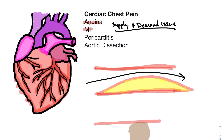Classic angina chest pain: somebody comes in and says, 'Hey doc, I walk three blocks and now my chest starts to hurt. It hurts when I walk faster or do a light jog, but as soon as I rest for 10 or 15 minutes, it gets better.' Exercise increases demand. With increased demand, you aren't able to push enough blood flow past the blockage to supply the heart with what it needs, because when you exercise your heart beats faster to get more blood to the muscles and tissues. This blockage prevents enough blood supply from reaching the areas of heart beyond it.